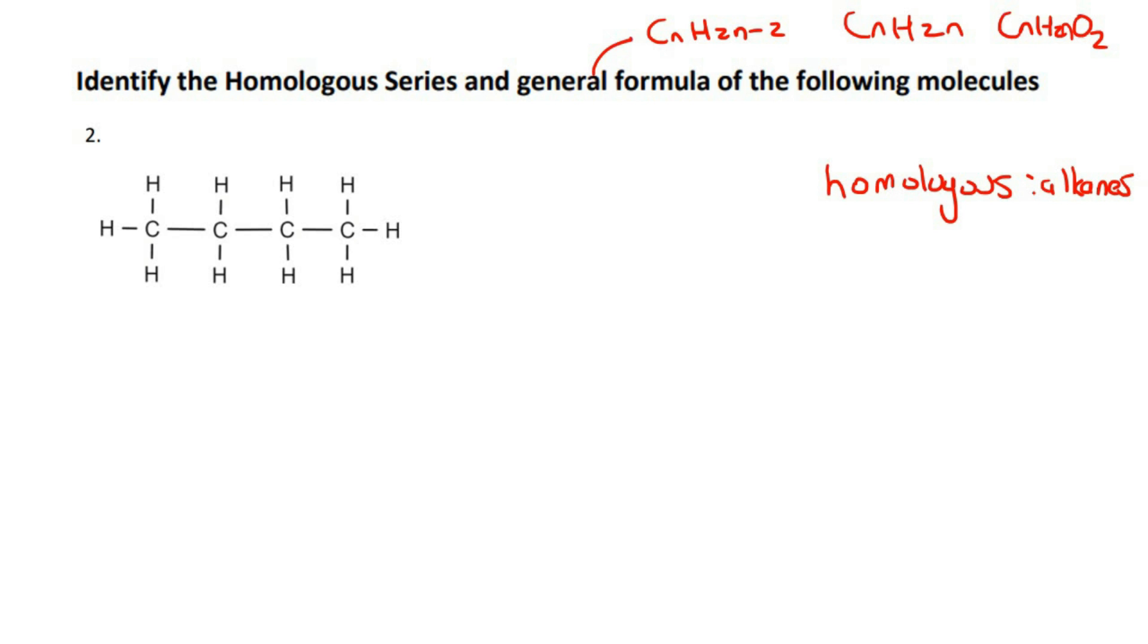Now for the general formula, you could memorize this if you wanted to. But if you do want to find a better way to do it, then what I'll show you is the following. Just count how many things there are. So there are four carbons. If you count the number of hydrogens, there would be 1, 2, 3, 4, 5, 6, 7, 8, 9, 10. Okay, so you might not be able to identify a relationship over there.